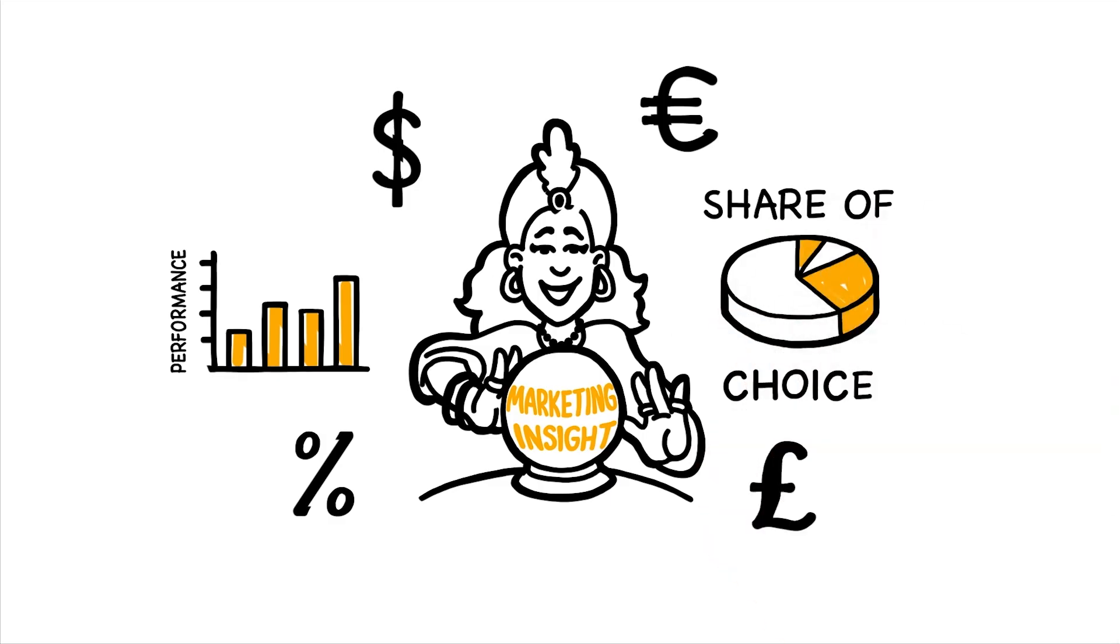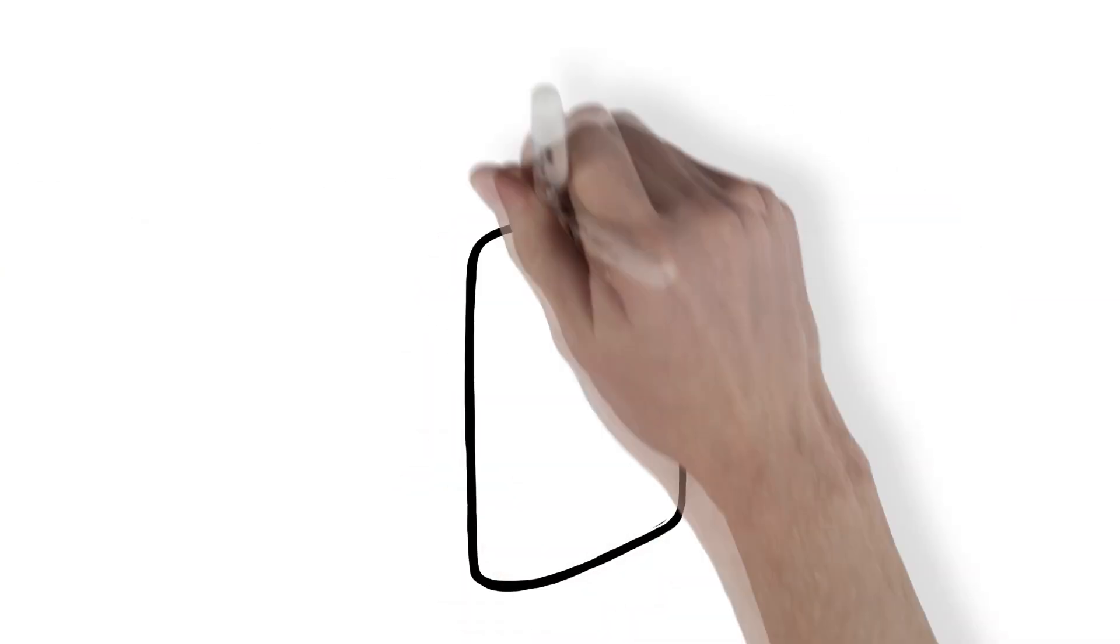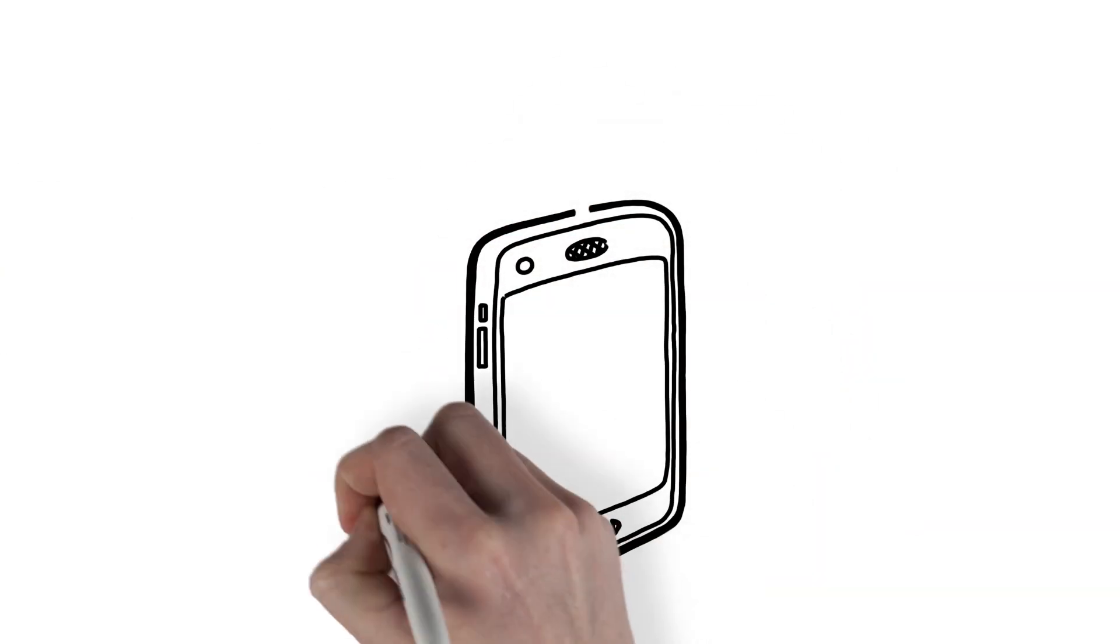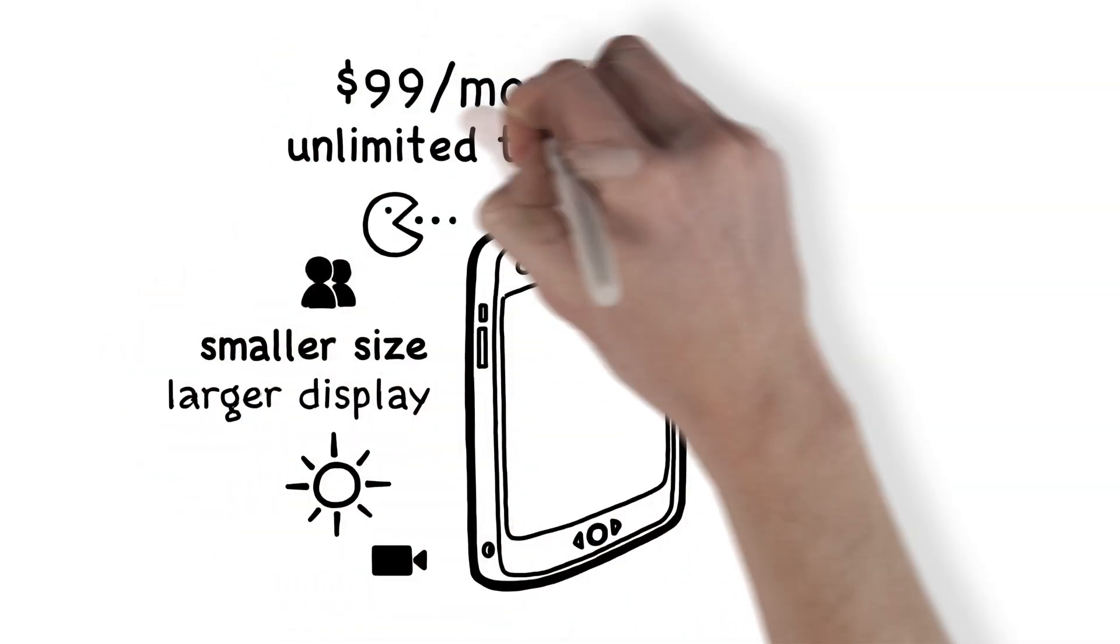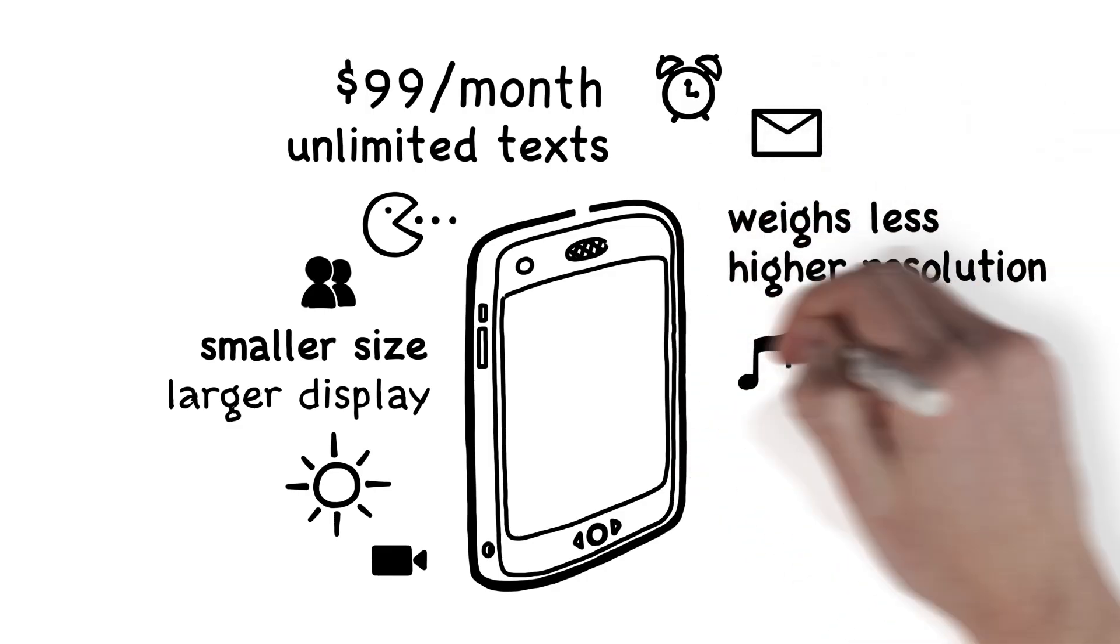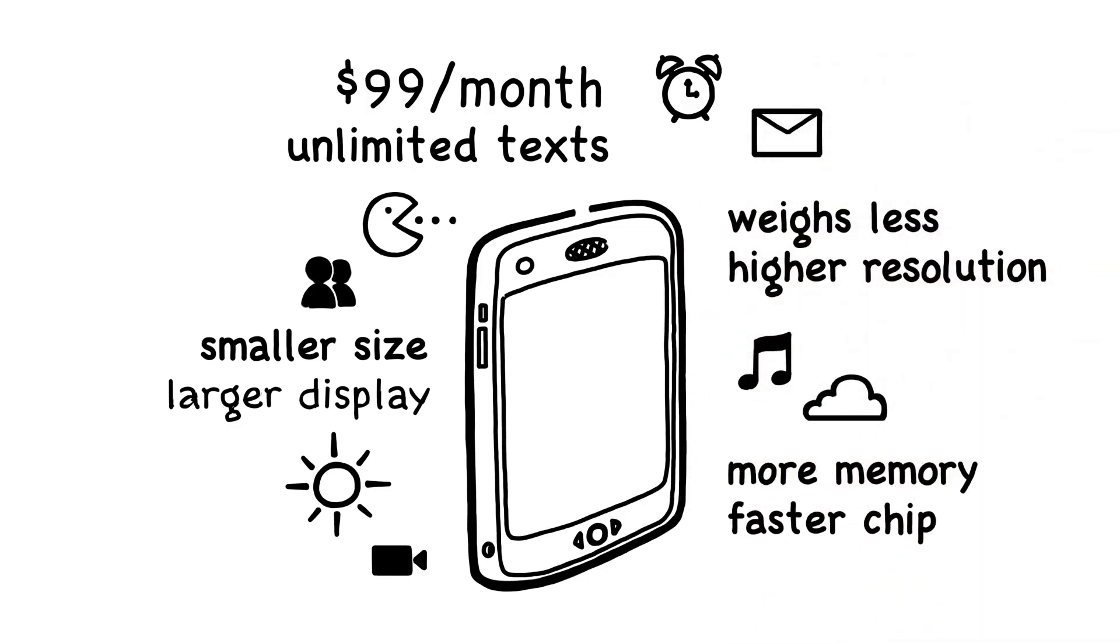Companies win over consumers by putting in the right features and charging the right price. For example, smartphone manufacturers are packing more and more capabilities into these tiny devices with billions of dollars at stake if they get the right combinations of features and price.